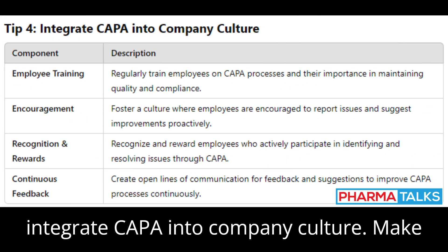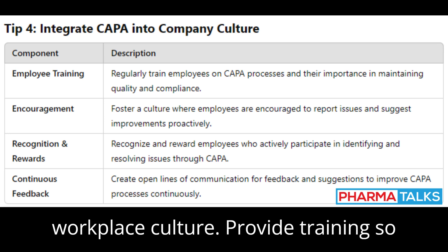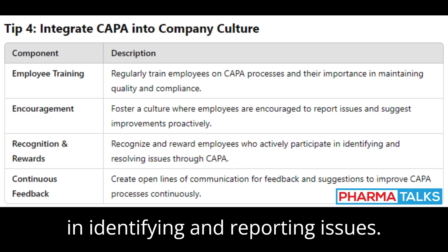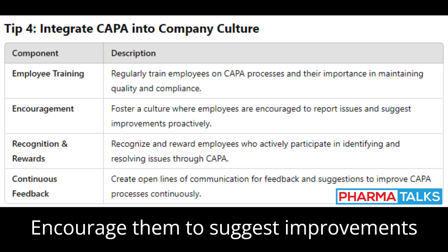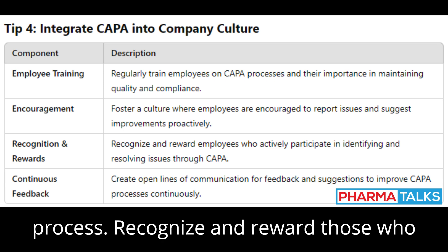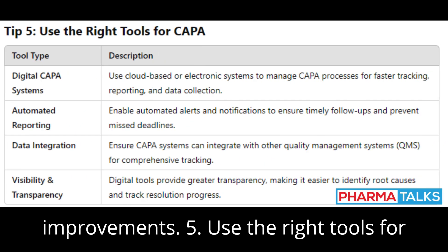Tip 4: Integrate CAPA into Company Culture. Make CAPA awareness a core part of your workplace culture. Provide training so that all employees understand their role in identifying and reporting issues. Encourage them to suggest improvements and actively participate in the CAPA process. Recognize and reward those who take initiative in driving quality improvements.